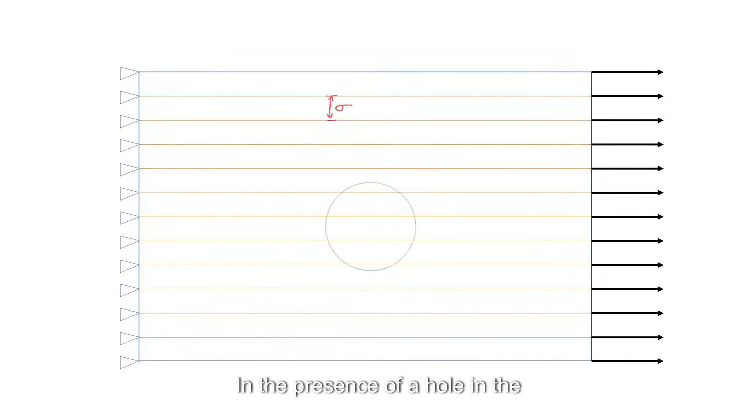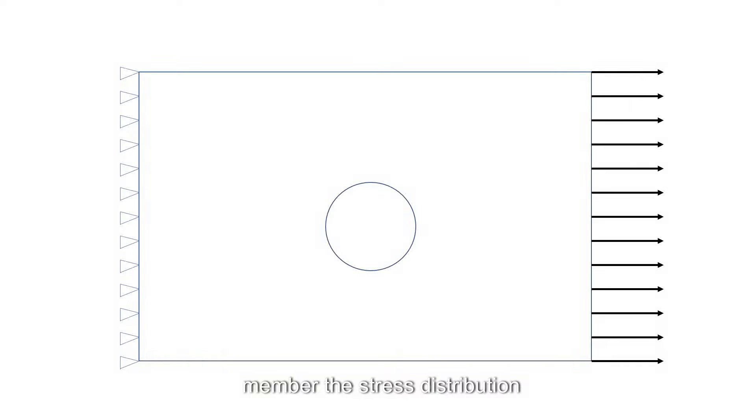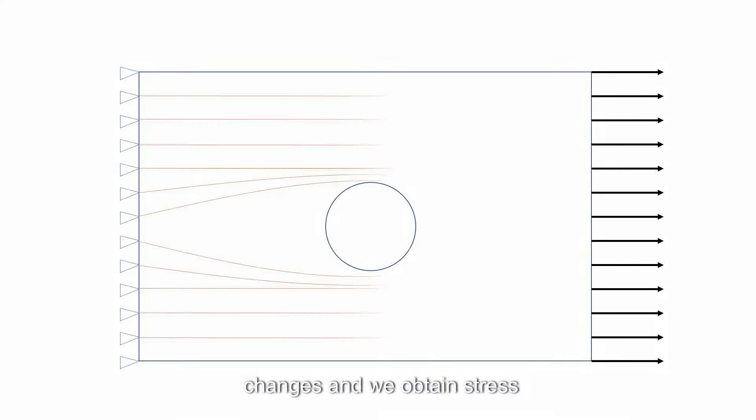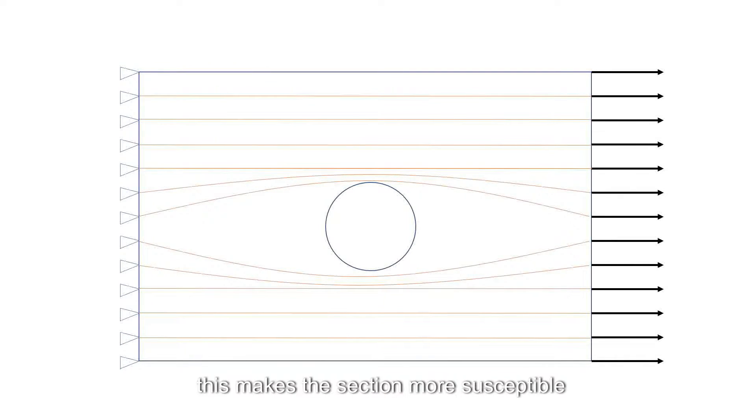In the presence of a hole in the member, the stress distribution changes, and we obtain stress concentrations around the hole. This makes the section more susceptible to fracture and has to be taken into consideration when evaluating the strength of the member in tension.